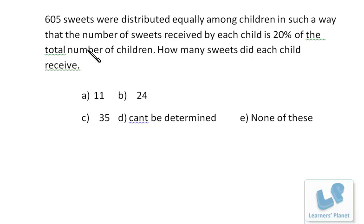Now, among the options, if we see, this is an odd number, so 24 cannot be the correct choice. Number of sweets, 24 cannot be because it's an even number, so it cannot be a factor of 605, right?